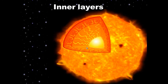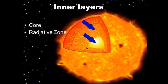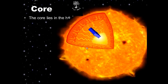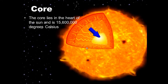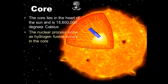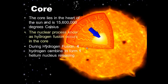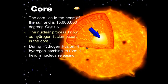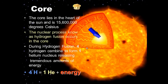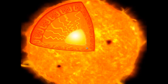The inner layers of the Sun include the core, the radiative zone, and the convection zone. The core lies at the heart of the Sun and is fifteen million, six hundred thousand degrees Celsius. The nuclear process known as hydrogen fusion occurs in the core. During hydrogen fusion, four hydrogen atoms combine or smash together to form one helium nucleus, releasing tremendous amounts of energy. So: four hydrogen equals one helium plus energy.